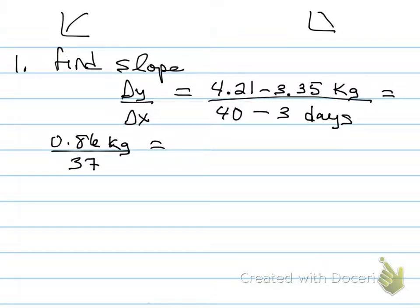Okay, so if we subtract these two, then we get .86 kilograms divided by 37 days. So that ends up being 0.023 kilograms are gained per day.